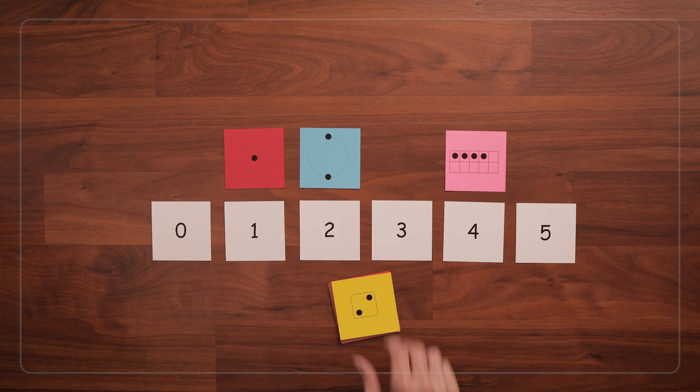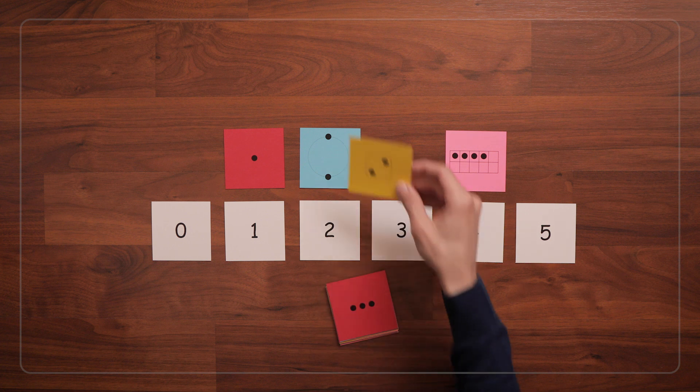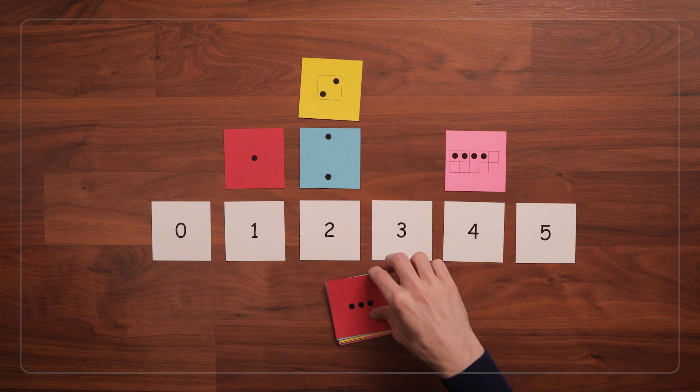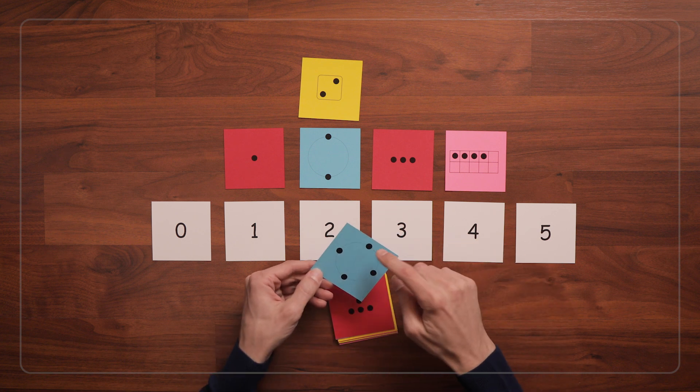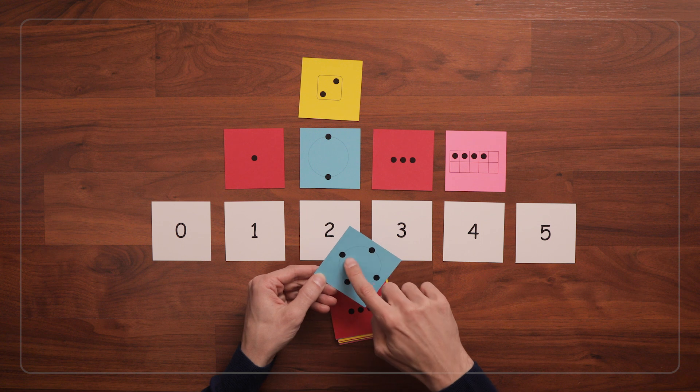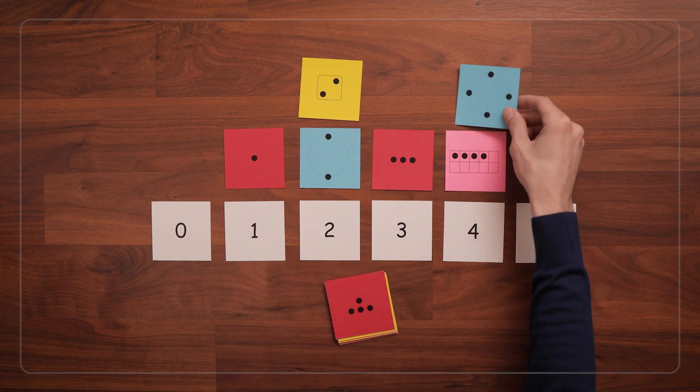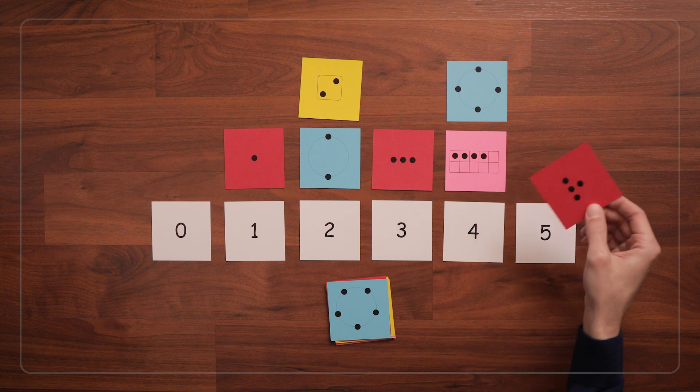Some kids will be able to immediately recognize and sort dot quantities zero through three, but with four or higher, they may need to count the dots one by one. And that's because we naturally subitize smaller numbers, like two and three. But the more dots there are, the harder it is to subitize.